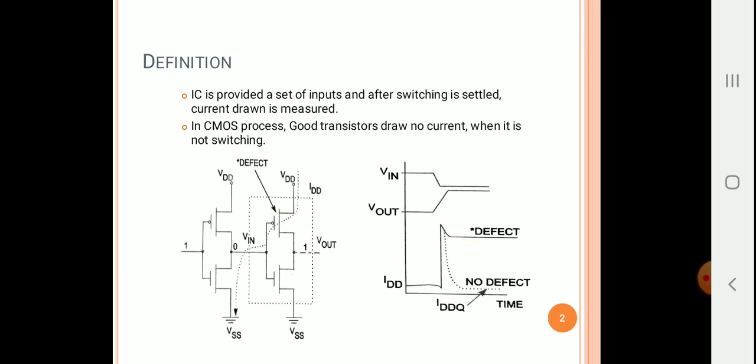To repeat once again: the IC under test or device under test will be given a series of test vectors and is allowed to settle to a final output value. After that, the current drawn by each transistor will be measured, and based on the logic function or logic functionality, the faulty transistors will be found.